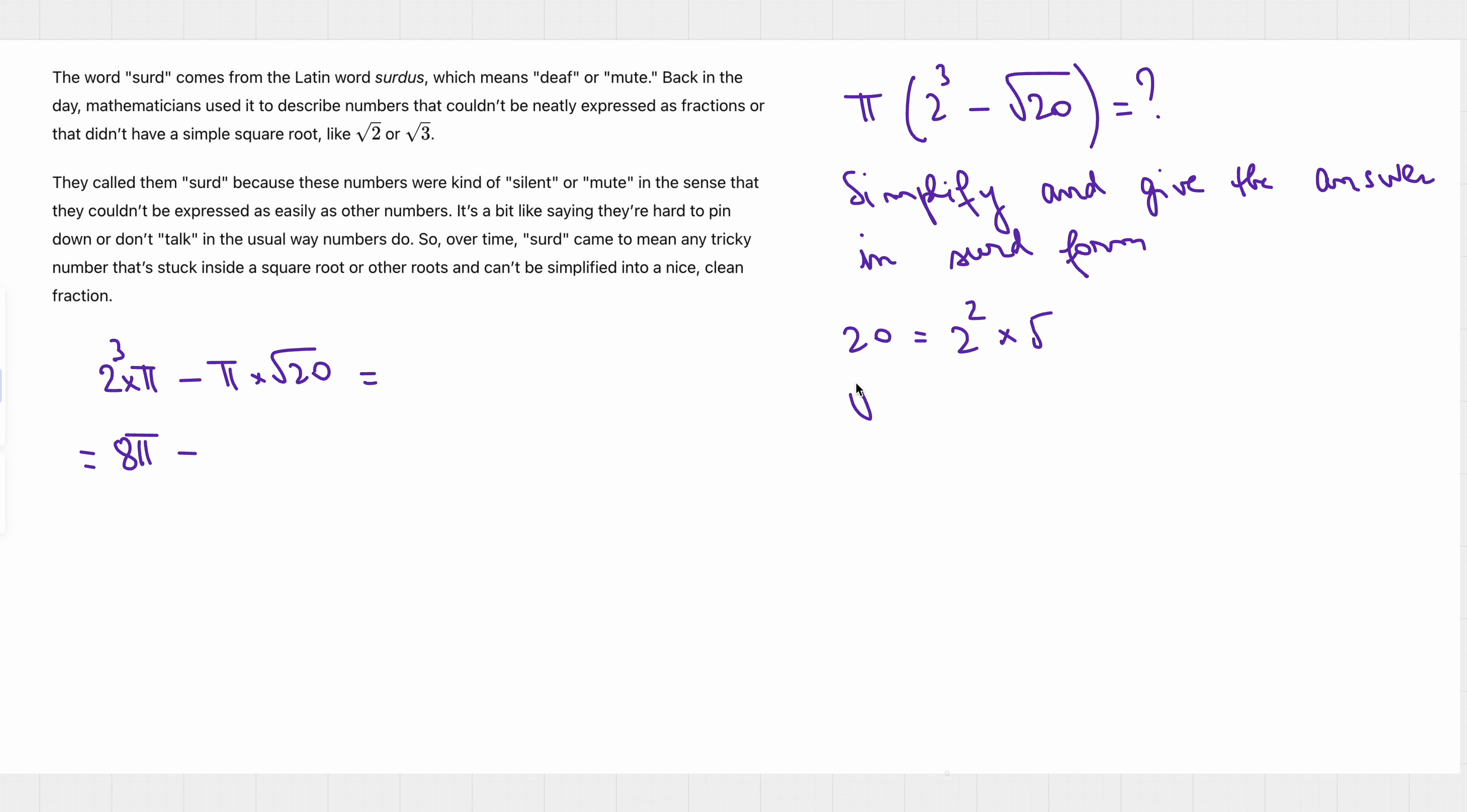And when we have square root of 20, practically it's square root of this multiplication, which is square root of 2 to the power 2 times square root of 5. And this one is 2 times square root of 5 times pi, 2 pi square root of 5.